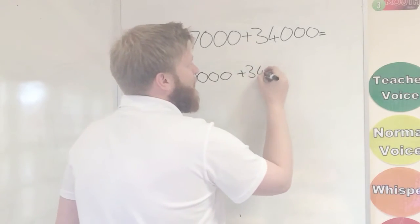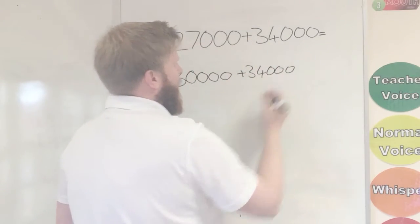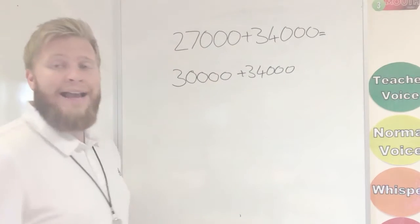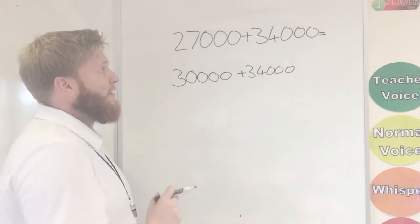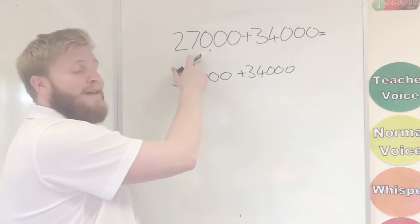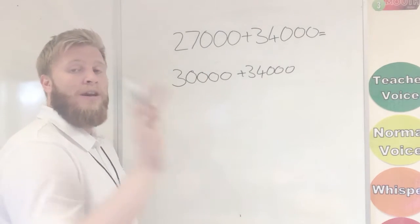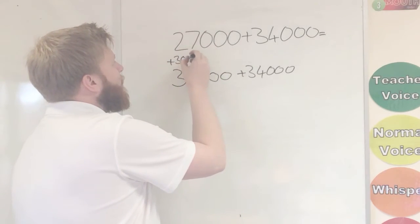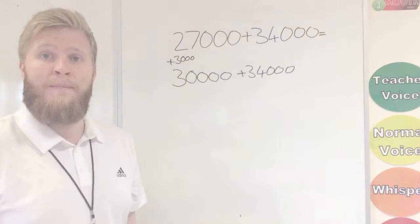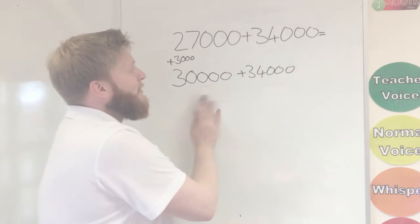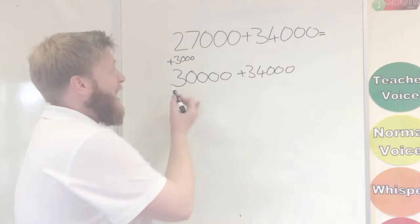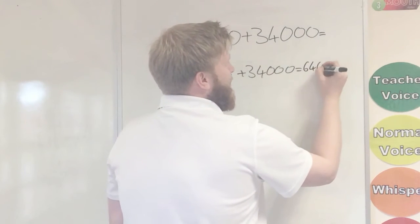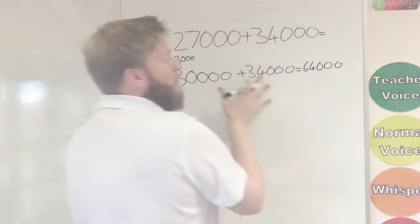I'll keep the other number the same. So now I've got this sum, but I need to remember how many I added on to make this 30,000. So I was on 27,000, and I'm on 28, 29, 30. I had to add 3,000 on to make that 30,000. Now I've got an easier sum. 30,000 plus 34,000. I know 3 plus 3 is 6, so I know my answer is 64,000 to this sum.